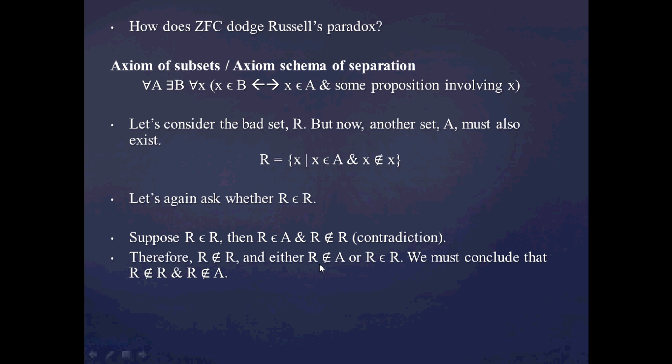So either x is not an A, or R is a member of the set R. Just the negation of one of these two propositions has to be true. Either R is not an A, or R is in the set R. Now, if we say that this one is the true proposition, then we get a contradiction. But if we say that this one is true, that R is not an A, then we're free of contradiction. So we just make the conclusion that R is not an R, and R is not in the set A. So R is not even in that set A that we assume to exist.